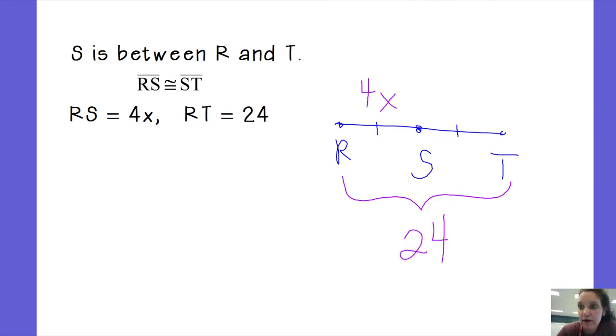We have the same thing going on here. We have part, we have a part which is 4X. We have the whole thing, but we don't have the other part. Well, if they're congruent, then they're the same. If RS is 4X, then ST is 4X. So I'm going to set up the same equation that I've set up every time.